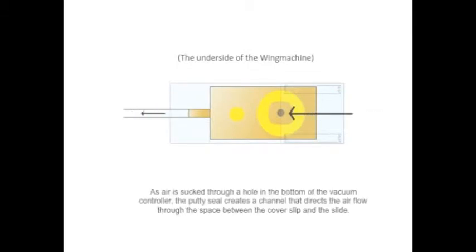As air is sucked through the hole in the bottom of the vacuum controller, the body seal creates a channel that directs the air flow through the space between the cover slip and the slide.